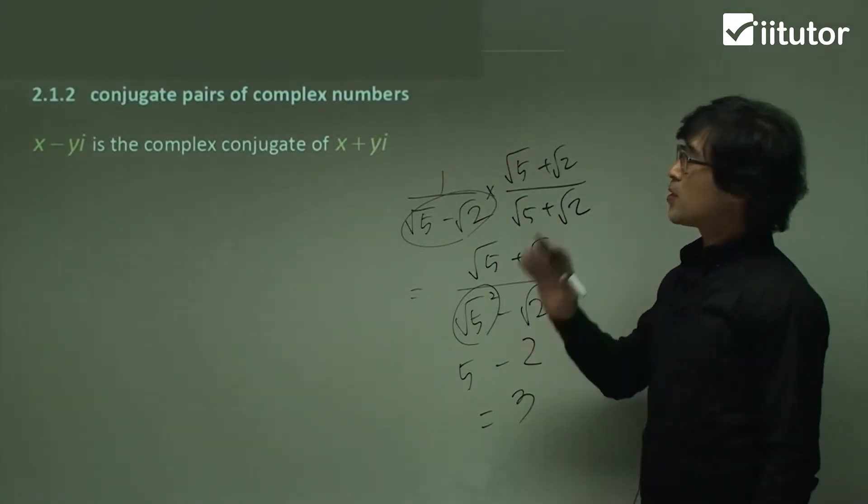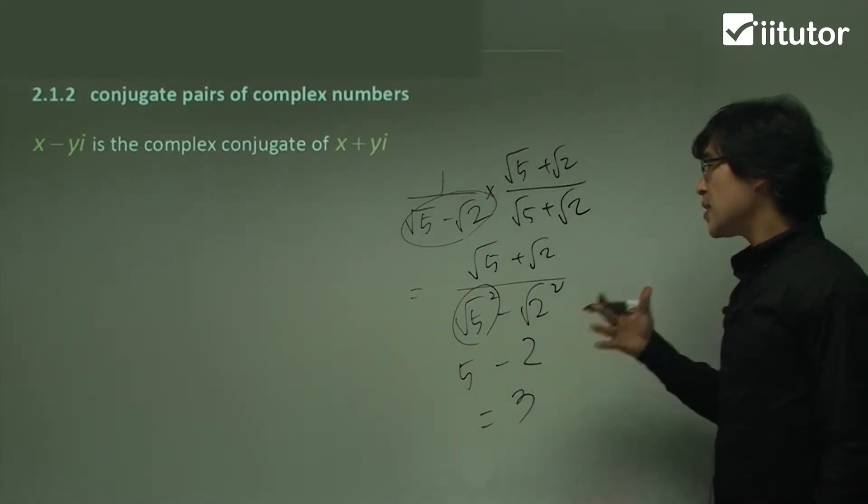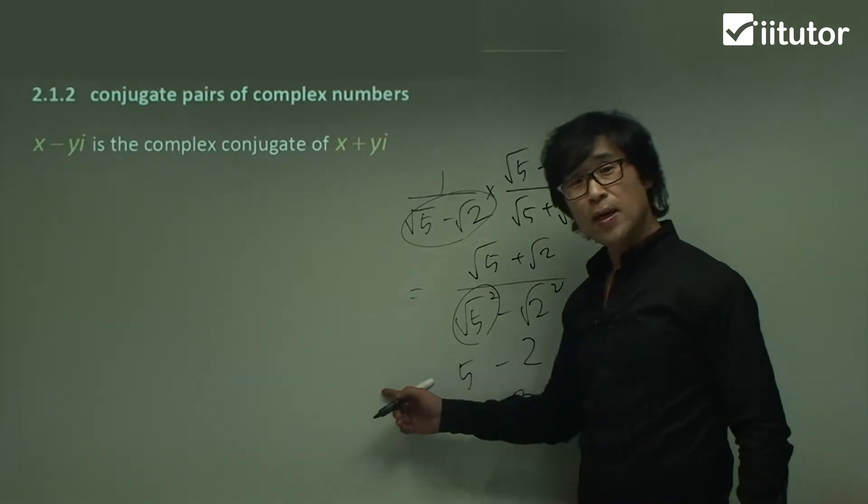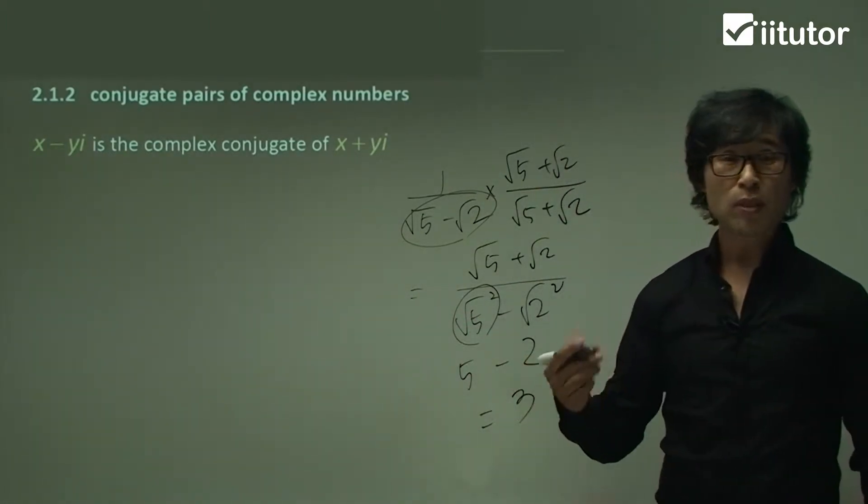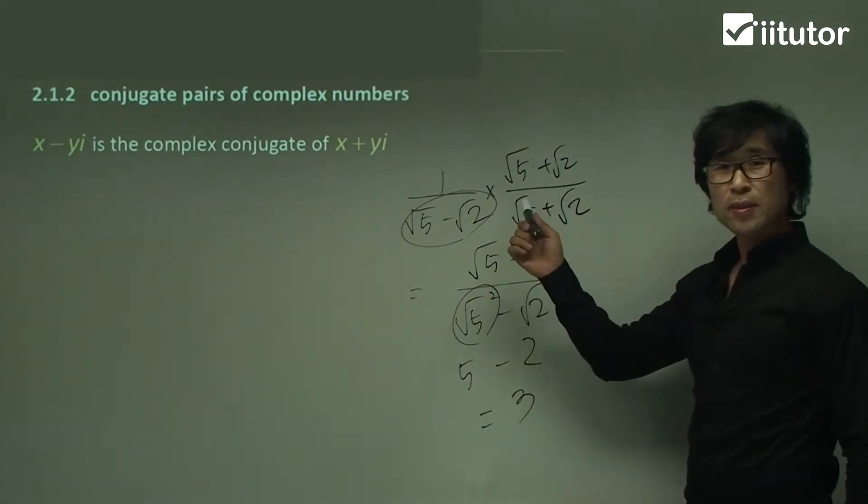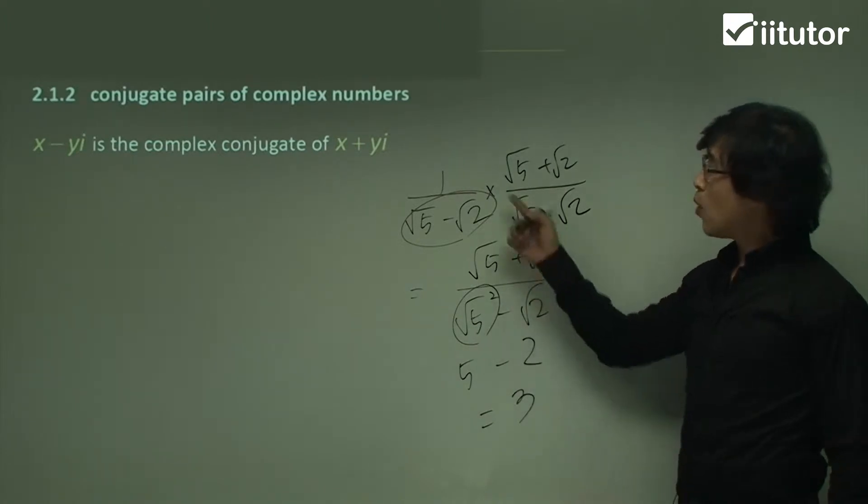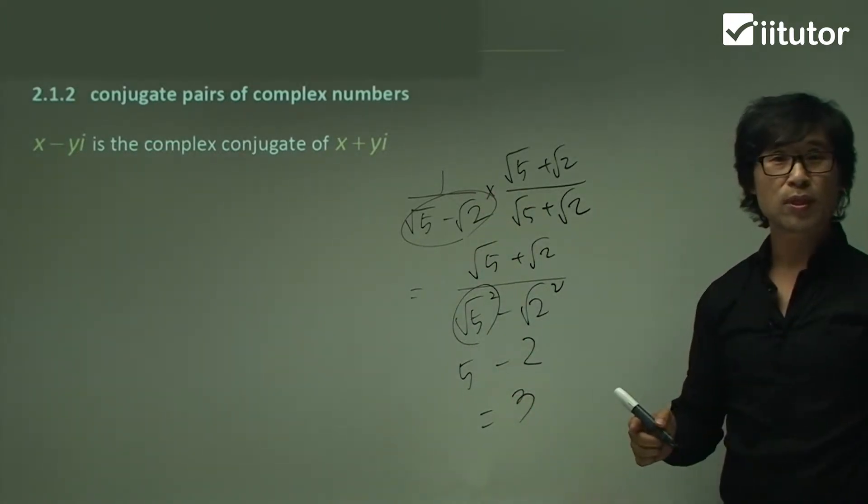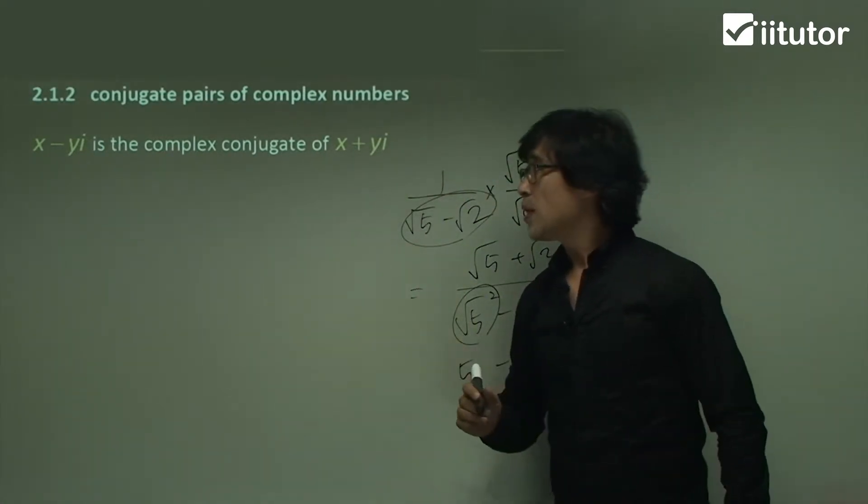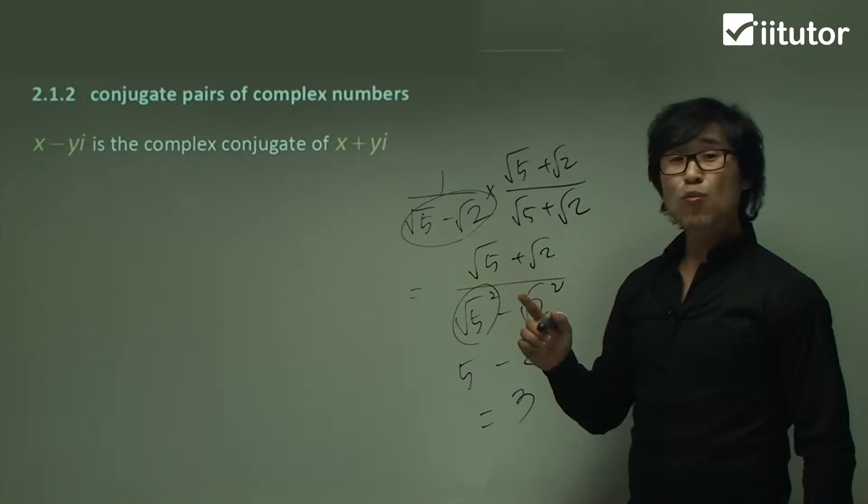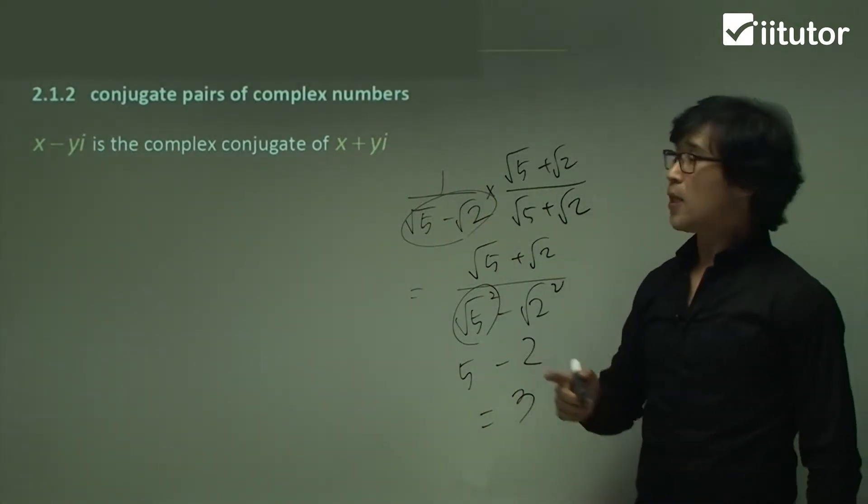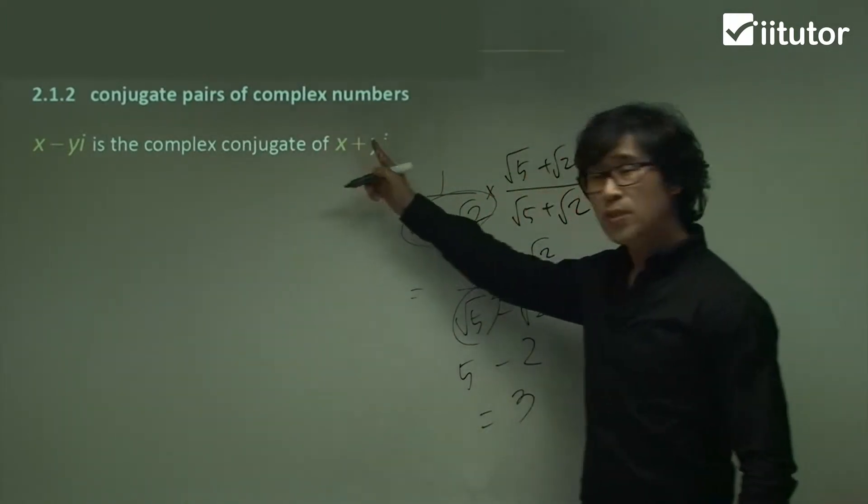In this complex number, conjugate pairs, it does exactly the same process. Whenever you have any complex number, any kind of imaginary number in the denominator, we will be doing very similar process by the use of i, while this question was using square root. As you guys can see from the board, we call x minus yi is the conjugate pair of x plus yi. So that is the conjugate pair of this complex number.